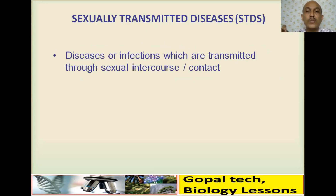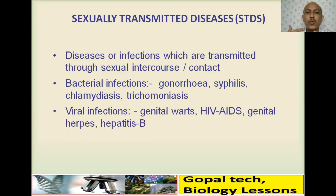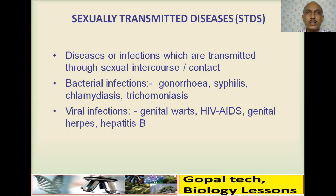STDs are diseases or infections transmitted through sexual contact between a healthy person and an infected person. Bacterial STDs include gonorrhea, syphilis, chlamydiasis, and trichomoniasis. Viral STDs include genital warts, HIV/AIDS, genital herpes, and hepatitis B. A possible exam question: classify STDs into viral and bacterial categories.